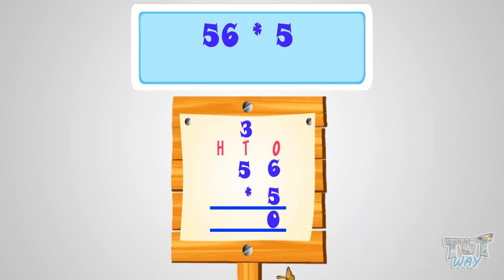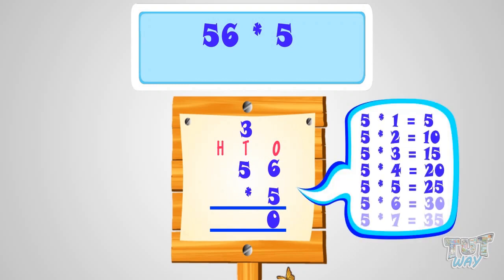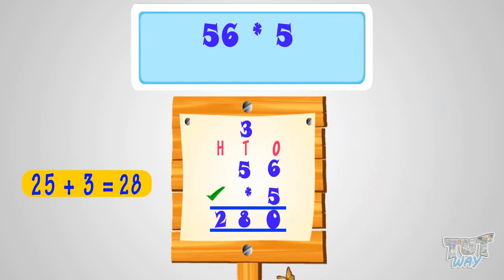Now multiply 5 with the next number, that is 5. 5 multiplied by 5 equals 25. And we have 3 carried. So, add it to 25. 25 plus 3 equals 28. So, write 28 in the answer or product. We did it! 280 is our answer or it's the product of 56 and 5.